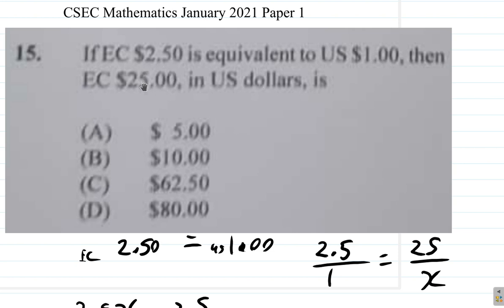25 EC is 10 times larger than 2.5. So the answer should be 10 times larger. The answer in US should be 10 times larger than 1 US. So of course, for question 15, the answer is B.